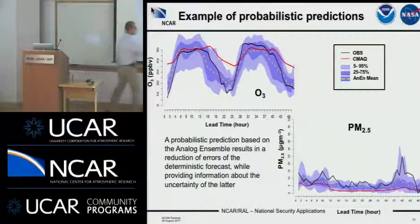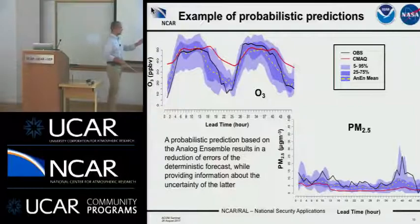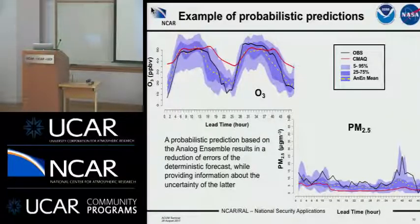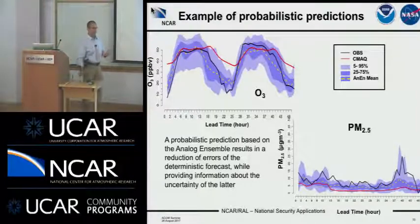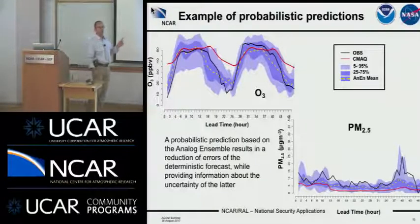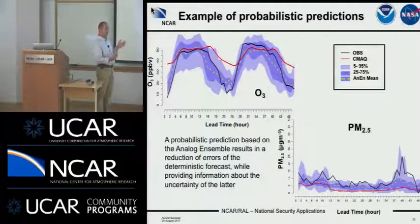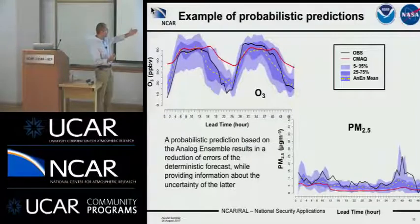Here is an example for PM2.5 — a good example of how probabilistic prediction can be useful. Looking around a certain period, both the CMAQ model and the analog ensemble mean — which you can think of as a special case of a deterministic prediction — are missing the observed peak. However, if for that event you use the probabilistic prediction and look at the actual range of ensemble members, your ensemble would have provided a probability of concentration being above, for example, 15-20 micrograms per cubic meter.